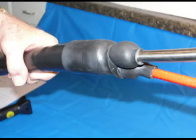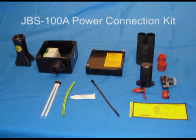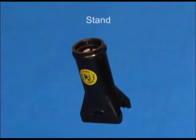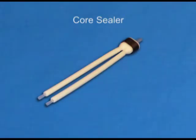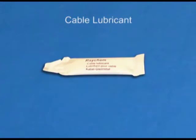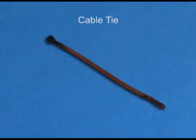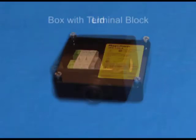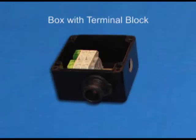Let's look first at the JBS 100A power connection kit for providing power to the heat tracing. The following components are found in the kit: one stand, one core sealer, one green and yellow tube, cable lubricant, one cable tie, one lid, and one box with a terminal block.